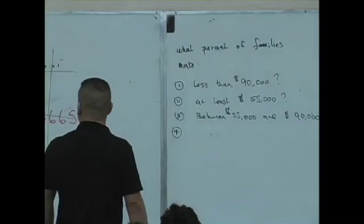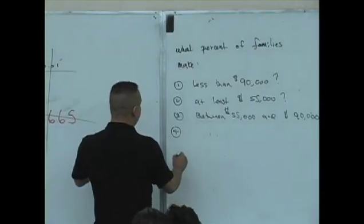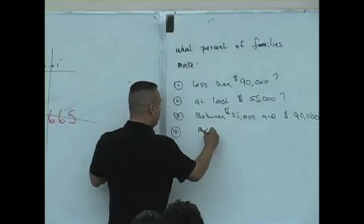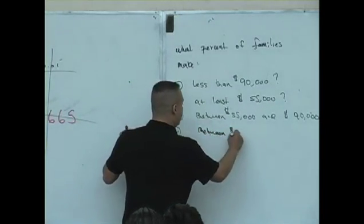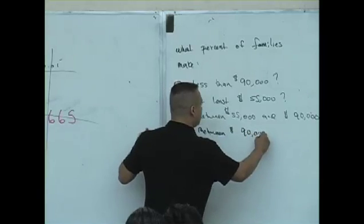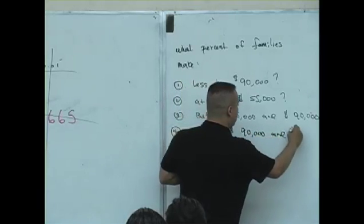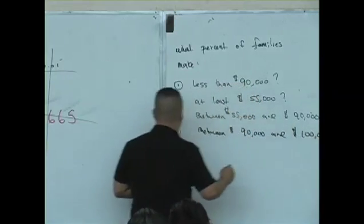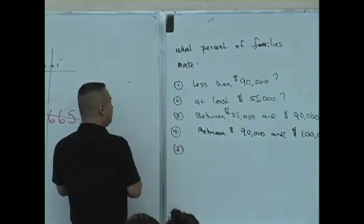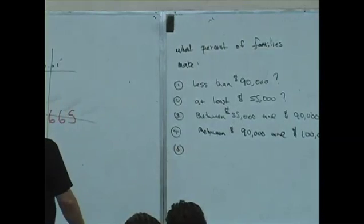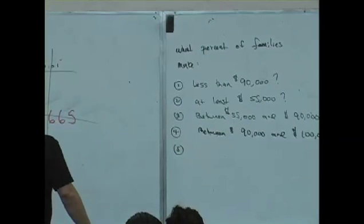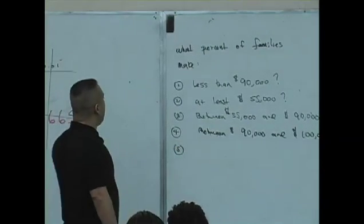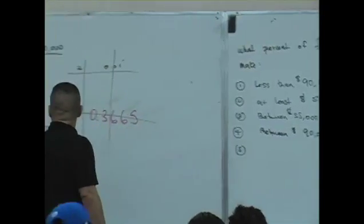Four, between 90,000 and 100,000. Five, at least 55, less than 90,000.